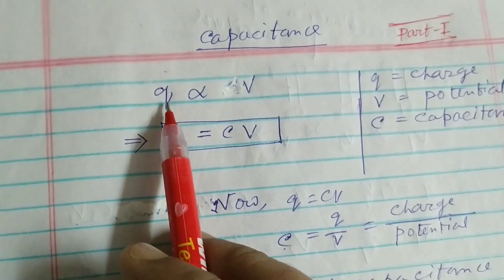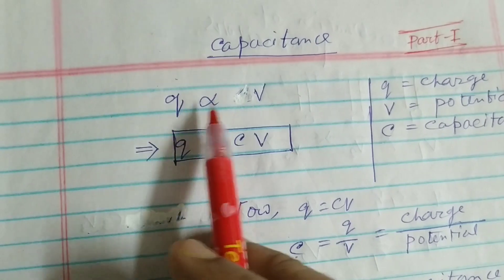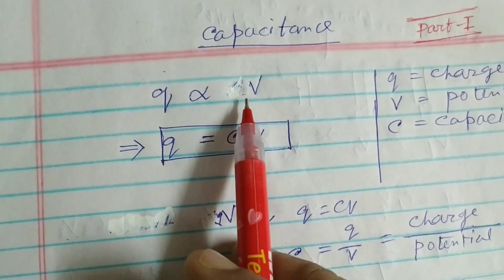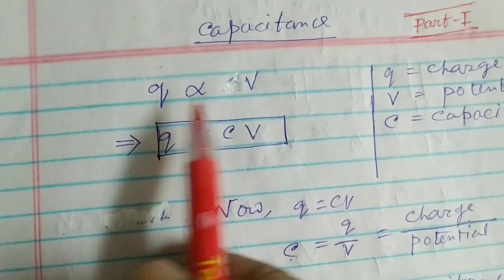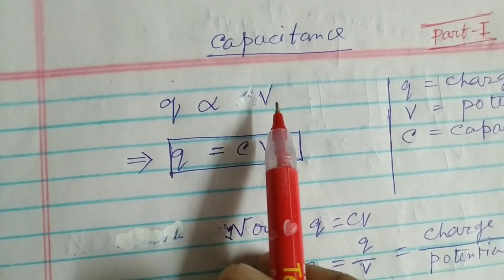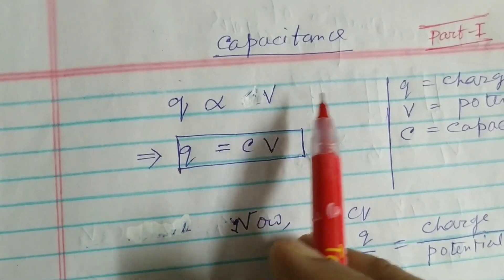So Q varies with V, means more the charge, more will be the potential. You can understand if you charge the mobile, then more charge will be accumulated, more will be its potential, that is, for longer time you can watch the thing.